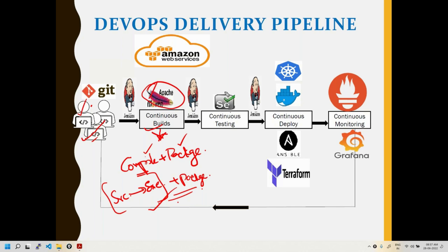For continuous testing, automation testers write test cases in Selenium, JMeter, or similar tools, and those test cases are executed automatically. If there are no bugs, the code gets deployed — involving Docker, Kubernetes, Ansible, and Terraform.